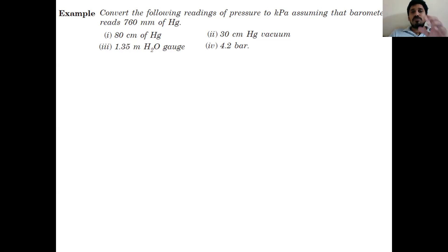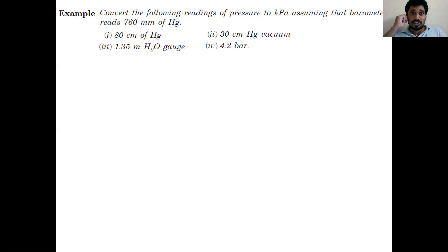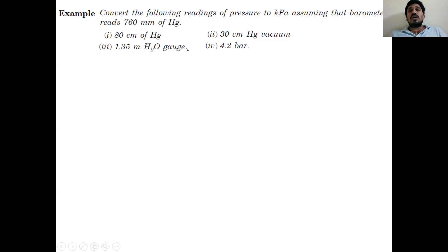The objectives to be converted to kilopascal are: first, 80 cm of Hg; second, 30 cm Hg vacuum; third, 1.35 meters of water gauge; and fourth, 4.2 bar. These four values you have to convert into kilopascal.